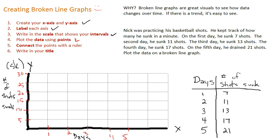Now I'm just going to need to plot my data. So day one, I look at my t-table again, day one, he sunk seven shots. So day one, seven, so just above five. Day two, I go straight up past ten to eleven. Day three, all the way up to thirteen. Day four, all the way up past fifteen to seventeen. And day five, all the way up past twenty to twenty-one.